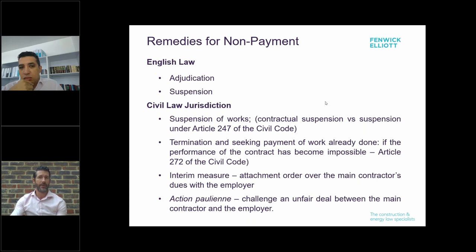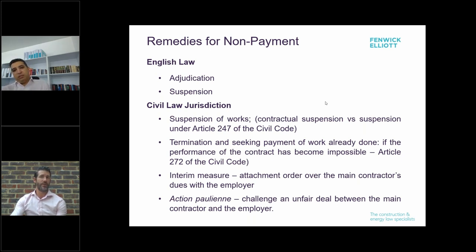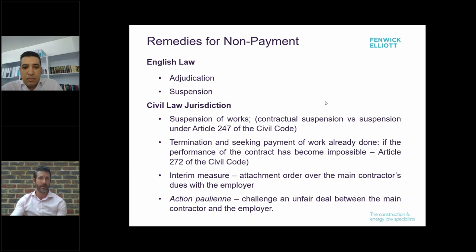The second remedy for non-payment in the Construction Act is the right to suspend the works. Section 112 of the Construction Act specifically entitles a party under a construction contract which is owed a sum to suspend performance until payment is made. Suspension can be made on just seven days' notice, and if delay occurs to the works of the party who has not been paid because of that suspension, that party will be entitled to an extension of time.